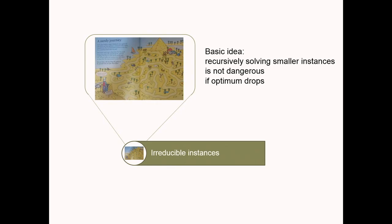Next we reduce to irreducible instances — we reduce until we can't, and what remains is irreducible. We can recurse and solve smaller instances recursively, which is safe if the optimum drops. To understand why, let me show you the Frieze-Galbiati-Maffioli algorithm from 1982, which gives a log n approximation.